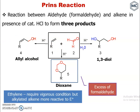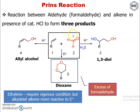Ethylene requires vigorous conditions for this reaction. However, when it is alkylated, the inductive effect increases the reactivity — the nucleophilicity is increased — and that is why alkylated alkenes are more reactive towards the electrophile formaldehyde.